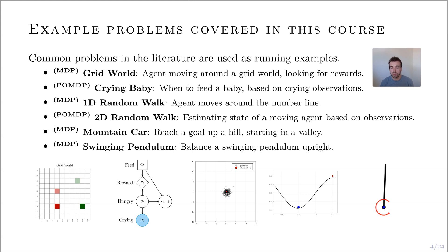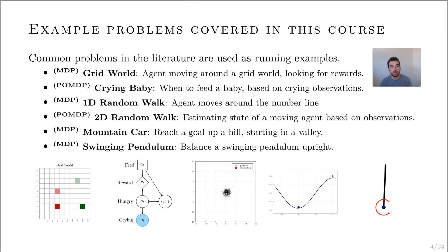The first problem is the grid world — an agent moving around a grid, trying to collect as many rewards as possible while avoiding negative rewards. This is the first MDP I'll introduce in excruciating detail. The next is the first POMDP I'll introduce: the crying baby problem, where we can only observe that the baby is either crying or quiet, and we want to know if the baby is truly hungry. The action is: do we feed the baby or ignore it? Next is a one-dimensional random walk, used in the stress testing case, and a two-dimensional random walk used to estimate the state of an agent in some environment.